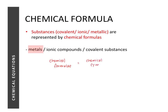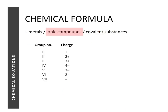For example, when iron reacts with oxygen, the chemical formula for iron is just its chemical symbol. When manganese reacts with chlorine, the formula for manganese is Mn — just look it up in the periodic table. And when sodium reacts with water, the chemical formula for sodium is simply its chemical symbol Na.